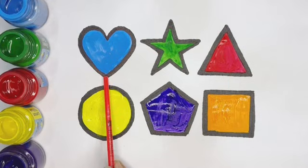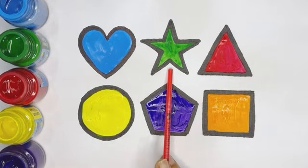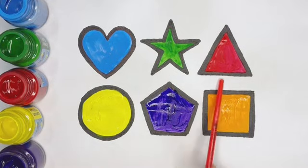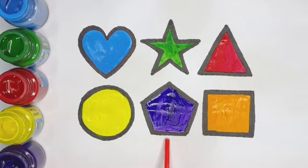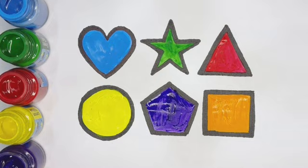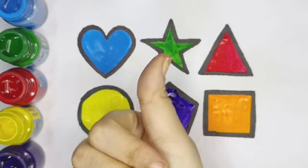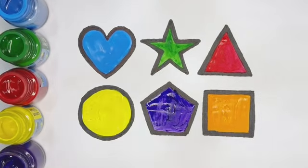Light blue color heart, dark green color star, red color triangle, yellow color circle, violet color pentagon, orange color square. Kids, hope you like this video. Please share and subscribe to my YouTube channel. Thank you. Bye.